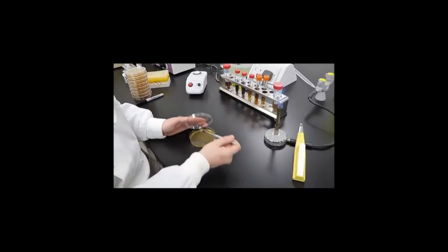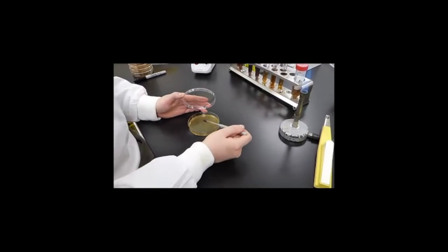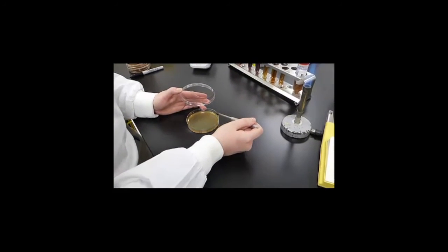The streaking process requires us to do a number of streaks progressively around the agar plate. We're doing two or three here. We're flaming the loop again, and that's very important. Otherwise, we'll end up spreading a whole mass of organisms around the plate.